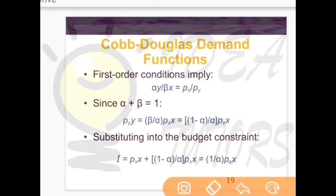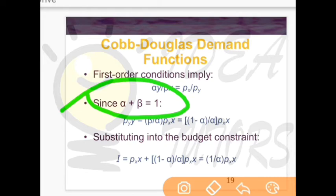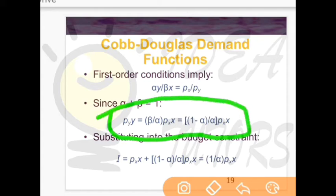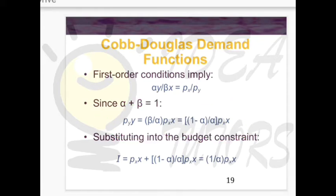Here we assume that the sum of alpha and beta equals one — alpha and beta being the powers of X and Y respectively. This is the assumption for this Cobb-Douglas function. From this relationship, we can derive the value of py times y.